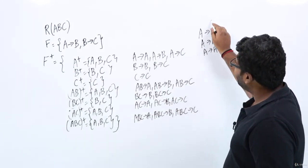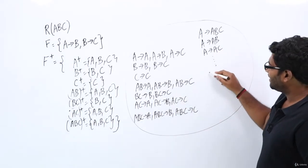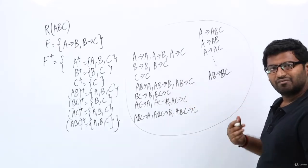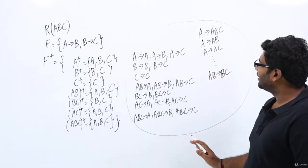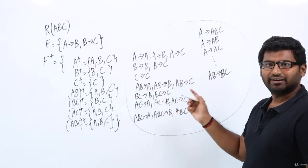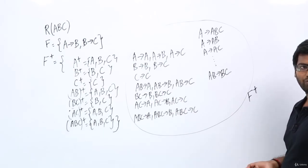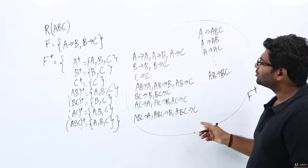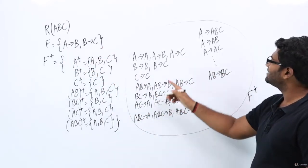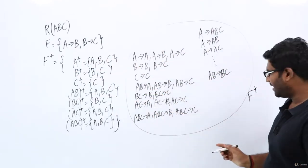From closure of ABC: ABC implies A, ABC implies B, ABC implies C. We can still derive more functional dependencies by unioning right-hand sides — for example, A implies ABC, A implies AB, A implies AC, and AB implies BC. If we collect all of these into a single set, we can name that F plus, the closure of F — the set of all functional dependencies which hold on F, both explicitly mentioned and inferred.